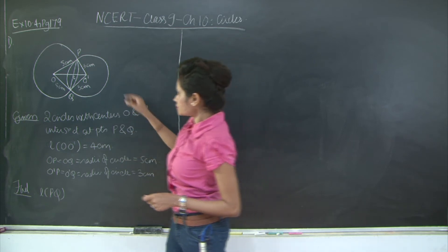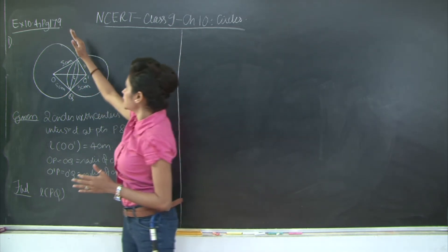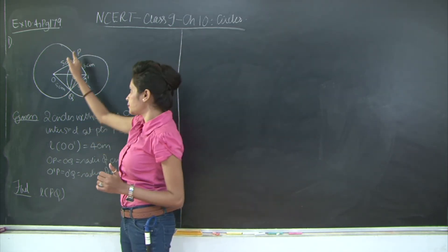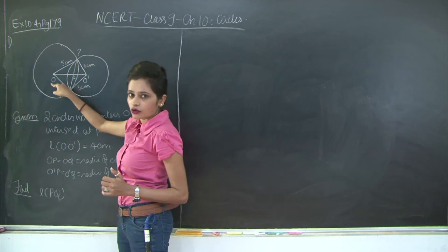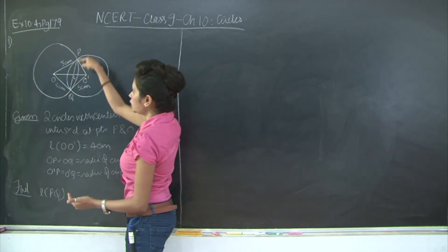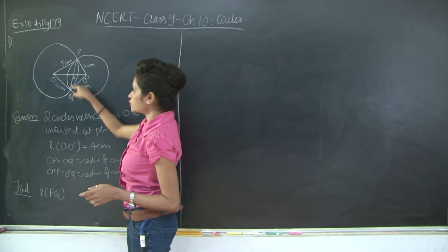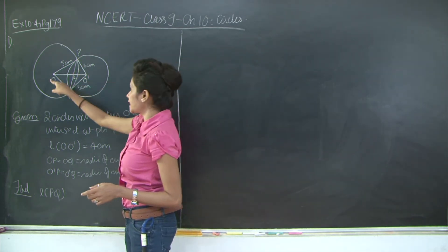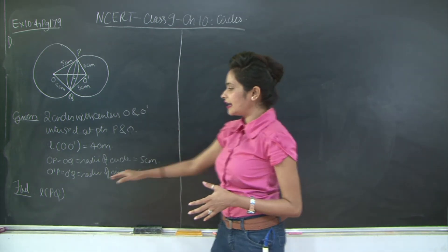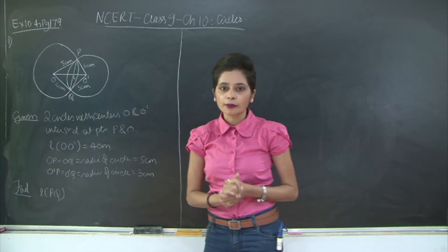Now I need to find the length of the common chord PQ. PQ is the chord for your circle with center O, and PQ is again the chord for the other circle. L is the point of intersection of this common chord and the line segment OO'. I need to find the length of PQ.